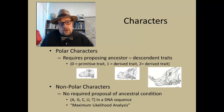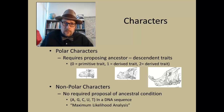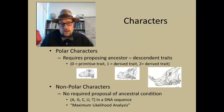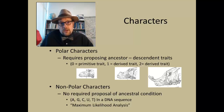Non-polar characters are characters that don't require proposing an ancestral condition — for example, a DNA sequence. You can take a DNA sequence, plug it in, and as long as you're matching the right sequences in your alignments it doesn't matter. You could have A, G, C, T and run analysis. When you use non-polar characters, this is referred to as maximum likelihood analysis. We won't go into much detail with maximum likelihood since we don't really use non-polar characters in paleontology.